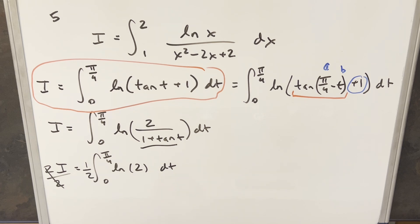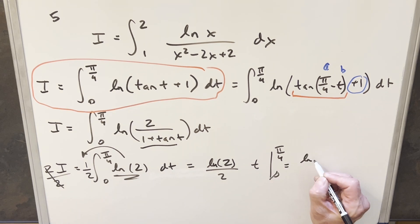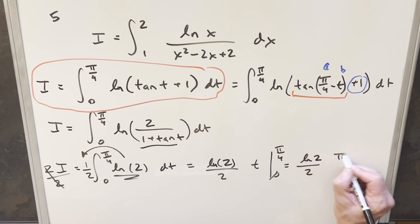And so then to get our solution, we just have an easy integral because this here is just a constant value that we can bring out front of the integral. So when we do that, we're going to have just natural log of 2 over 2 in front. Integral here becomes just 1, basically. We integrate this, we get t evaluated from 0 to pi over 4. Evaluating at 0 is just going to be nothing. Plug in pi over 4, we have natural log 2 over 2 times pi over 4. And so for my final solution to this, we just have pi natural log 2 over 8, and that's it.